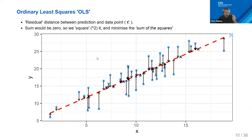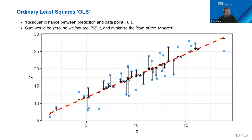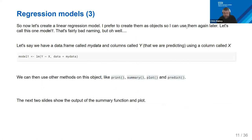The model is fitted by calculating the residual — the distance of each point to the proposed line — and minimizing those residuals. Since minimizing to zero is hard for computers, we square them so they're all positive and reduce to a minimum. This is called the sum of squared residuals. In a linear model there's an exact analytical formula for this.